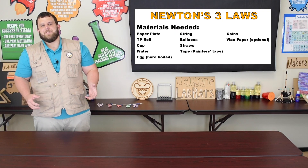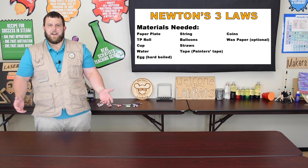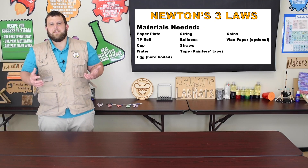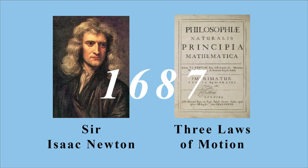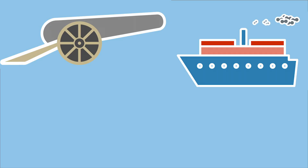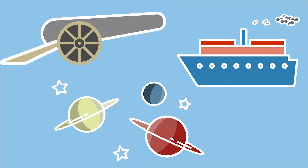Today we will be investigating the discovery that started modern science. Many historians will tell you that modern science started in 1687 when Sir Isaac Newton first published his three laws of motion. Newton loved to observe the world around him and was able to use his insight to explain how everything in the universe he knew about moved — from cannonballs and flight to ships at sea to the planets far out in space.